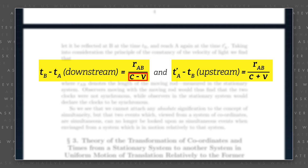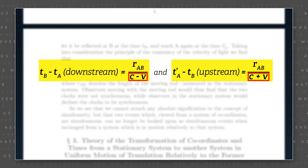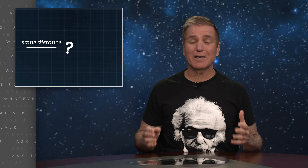And upstream travel time in frame S is equal to the same distance R-sub-AB divided by speed C plus the speed of the reference frame V. Clearly, when V is not zero, downstream travel time will be of greater duration than upstream travel time.